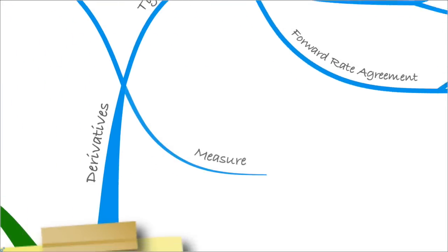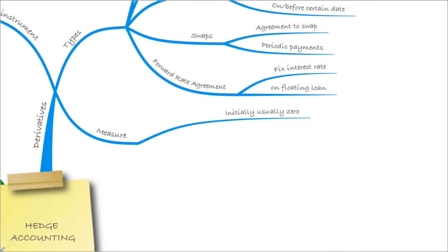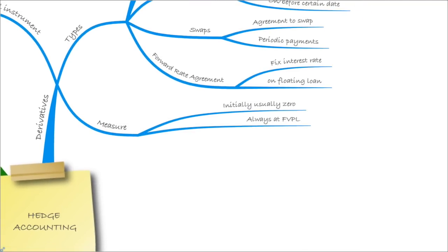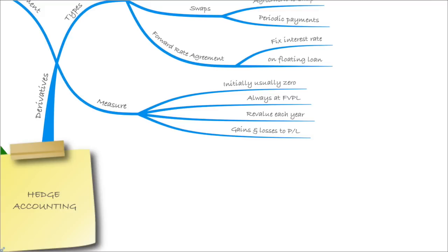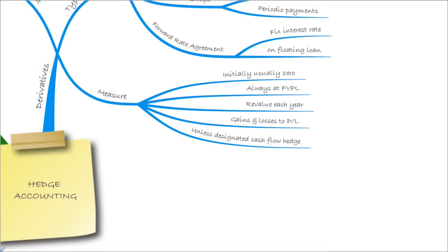Let's think about the measurement of derivatives. Initially there is usually zero value. Derivatives are always measured at fair value through profit and loss, with some slight exceptions. Usually we go fair value through profit and loss, which means you revalue it each year with the gain or loss taken to profit or loss. So the initial value is zero and then you revalue it to fair value at the year end — that creates a gain or a loss — unless it is a designated cash flow hedge, which we'll look at shortly.